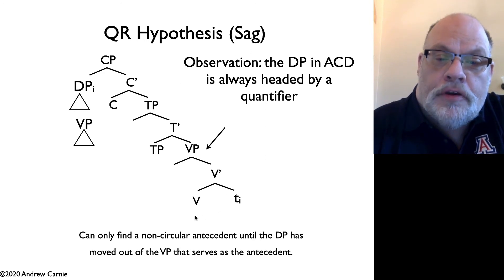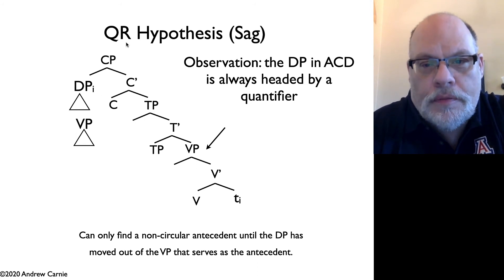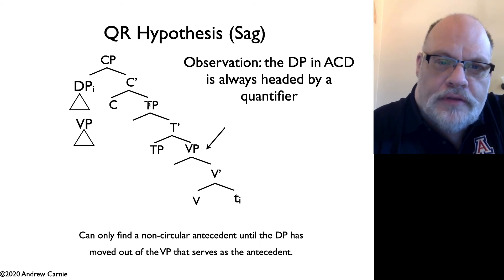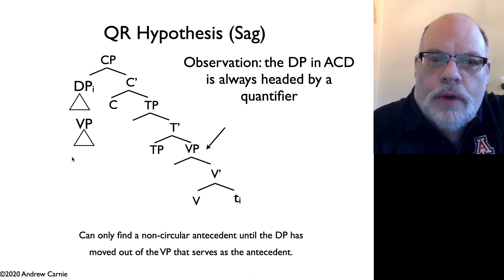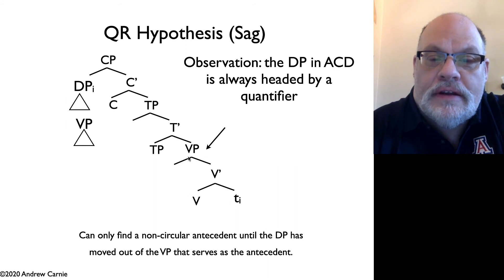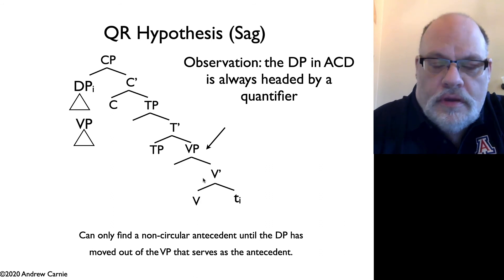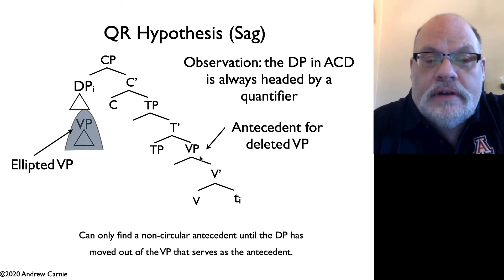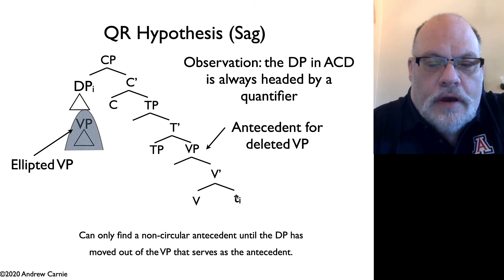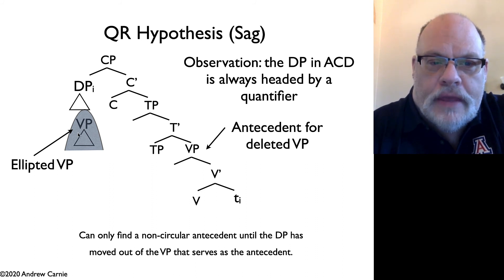This movement would happen covertly. In English, quantifier raising is a covert operation — you don't actually hear it, but it's motivated by the interpretations of sentences with wide and narrow scope. This proposal derives the property where the DP with the elided VP is outside the VP that is the antecedent, using an otherwise motivated operation, which is QR. The elided VP is up here, and the antecedent for that deleted VP is over here, and the antecedent no longer contains its own ellipsis — so that allows us to explain the non-circularity of antecedent-contained deletion.